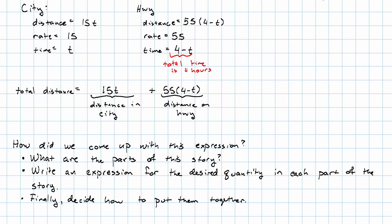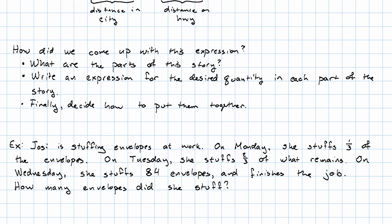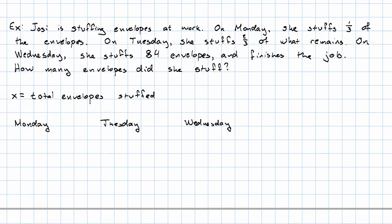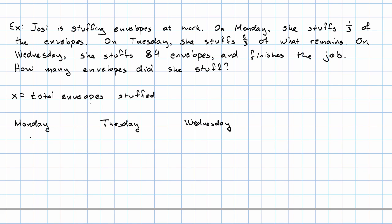Let's see another example. Suppose that Josie is stuffing envelopes at work. We want to figure out how many envelopes she stuffed all together. So the parts of this story are what she did on Monday, what she did on Tuesday, and what she did on Wednesday. In this problem, we aren't told what variable to use, but I think that the most obvious variable to use would be something that represents the total number of envelopes she stuffed. So on Monday, she stuffed one-third of the total envelopes.